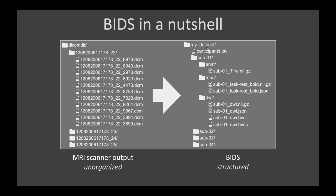Now let's talk about BIDS in a nutshell. BIDS can be really easily described, which is why I think it makes a lot of sense. When I first saw BIDS, it reminded me of how people just naturally organized their data — the same schema appearing independently in different people who didn't know about each other, then formalized into a standard. What you get out of an MRI scanner, the DICOM folder, is usually not really human-readable or interpretable.